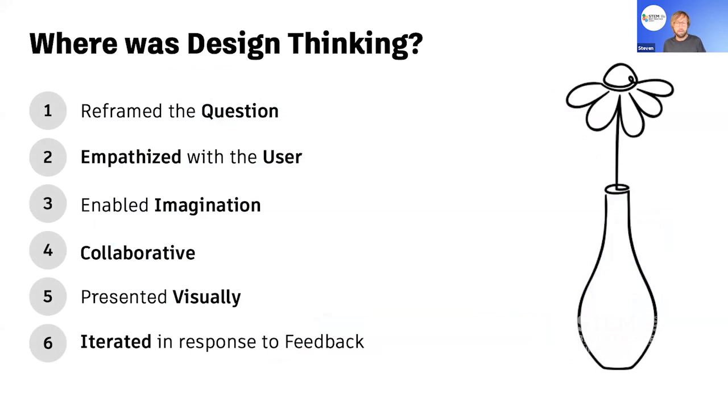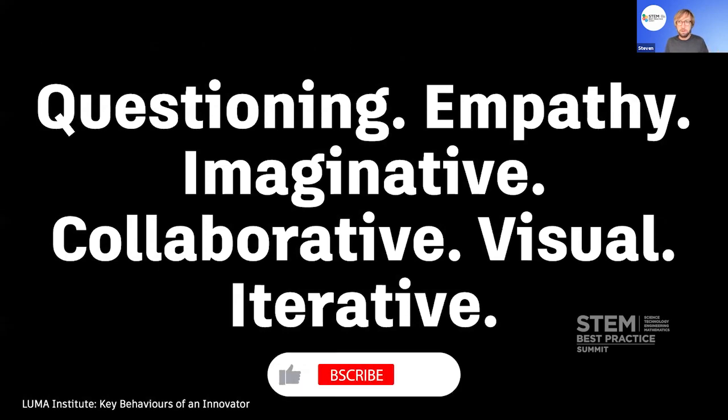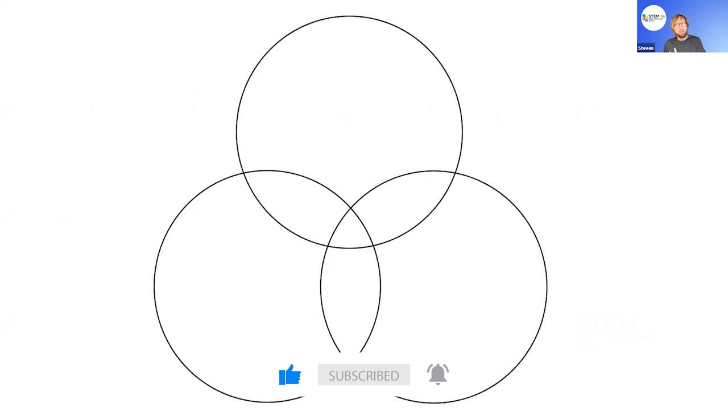So what's going on there with design thinking? Well, there's lots of things going on. We've reframed the question, we've empathized with a user, we've enabled imagination, we've been collaborative, we've asked the student to present visually, and they've iterated in response to feedback. Now all of those things there are what the LUMA Institute, which is a key institute in the world for teaching design thinking, identifies as the six main qualities of an innovator.